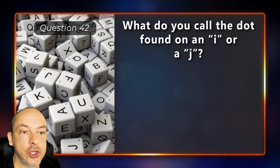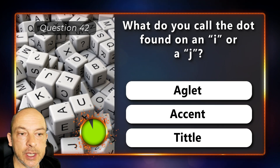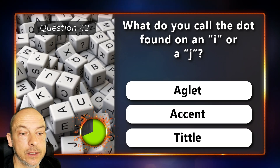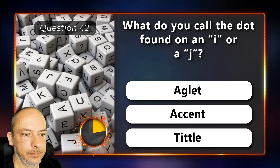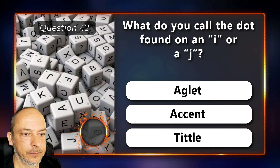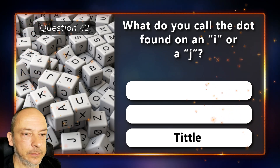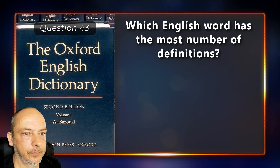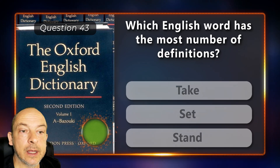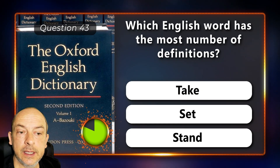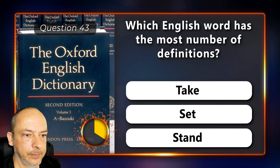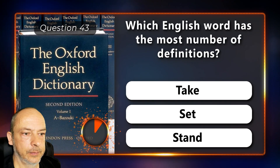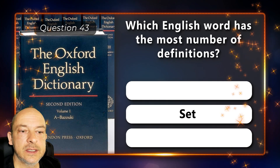What do you call the dot found on an 'i' or a 'j' — an aglet, an accent, or a tittle? It is called a tittle. Which English word has the most number of definitions — take, set, or stand? Set.